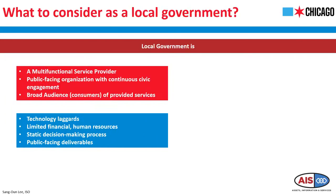So, what to consider as a local government? The local government is a multifunctional service provider to its constituents. With its wide spectrum of functions, the local government engages residents with various administrative measures — the audience of provided services are the local constituents. At the same time, the local government is a technology laggard. The city is very slow in accepting new technology. For example, some staff are still using five-year-old laptops. We also have very limited financial and human resources, specifically in cybersecurity.